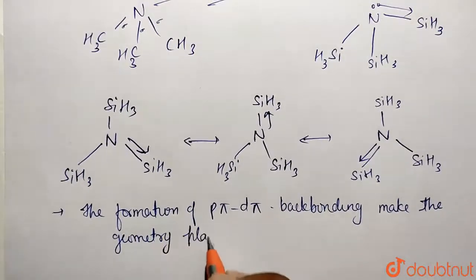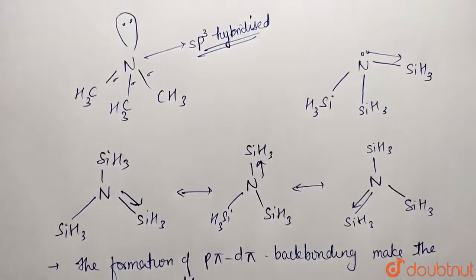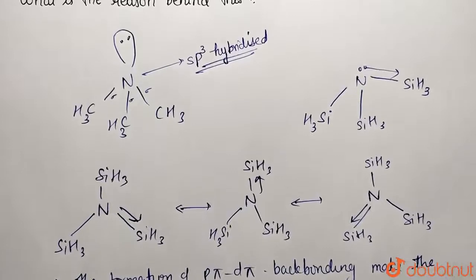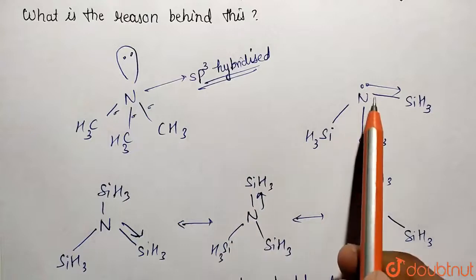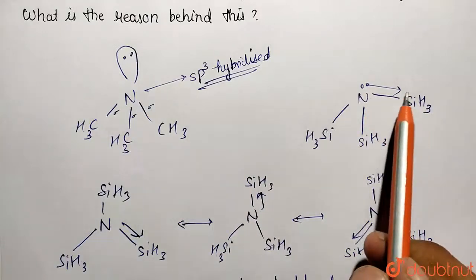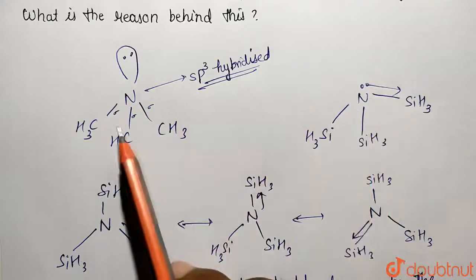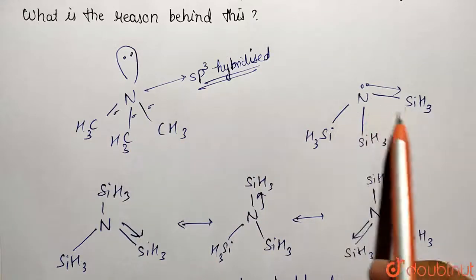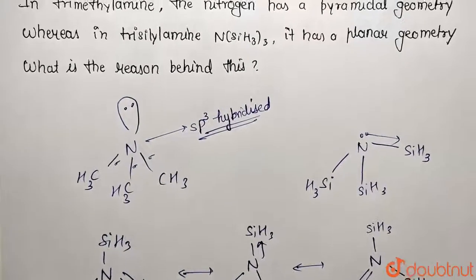So this was the reason that back bonding is informing the shape over here. And the reason is that very simple: here no back bonding takes place because it is not having any vacant d orbital. But here it is not the case—it is containing vacant d, and this back bonding has taken place, and the molecule is no longer a pyramidal shape, it's going to become planar. So this was the reason behind this question. Thank you.